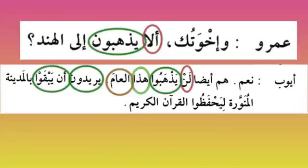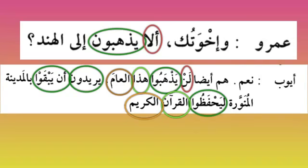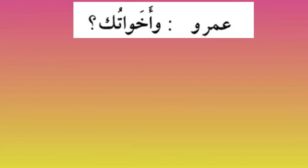'Yuriduna an yabqu' — 'yuriduna' means 'they want' — 'yabqu' is your al-masdar al-mu'awwal which means 'to remain'. 'Baqiya yabqa' becomes 'yabqu'. They want to remain 'bil madinati al-munawwara'. Why? 'Li yahfazu' — 'li' for ta'leel, 'yahfazu' is fi'l mansoobun because of an mudmara. 'Al-qur'ana' is your maf'ulun bihi, 'al-karim' is your na't. So they want to remain in Madinah al-Munawwarah to memorize the noble Quran.